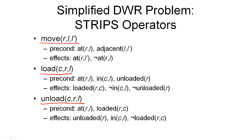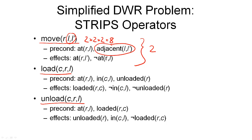Another interesting observation concerns the number of possible actions that are instances of each operator. Looking at the move action first, we have two possible robots, two possible locations for L, and two possible locations for L prime — so in theory eight possible instances. However, one precondition in the move operator is static, meaning it never changes across world states. Exploiting that, for each robot there are only two ways to satisfy the adjacent relation as defined in our problem, giving us four move actions total that are possible in this problem instance.